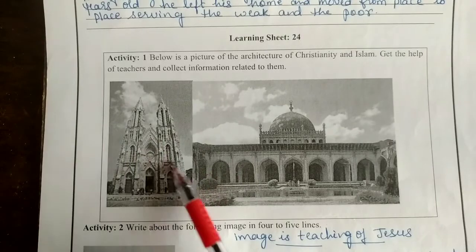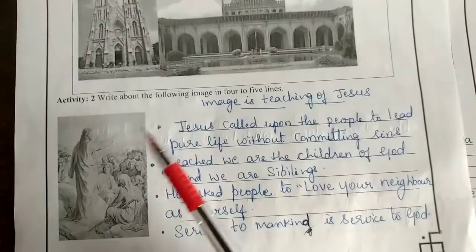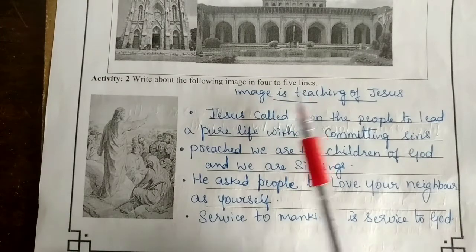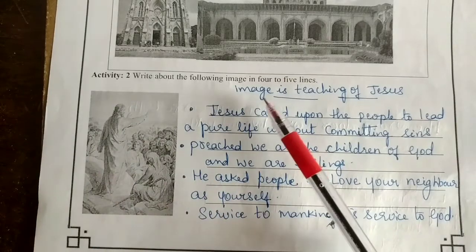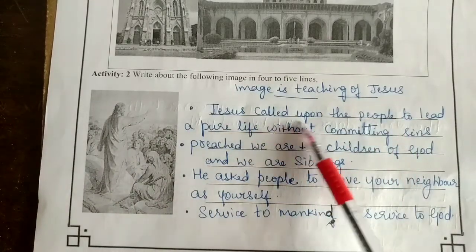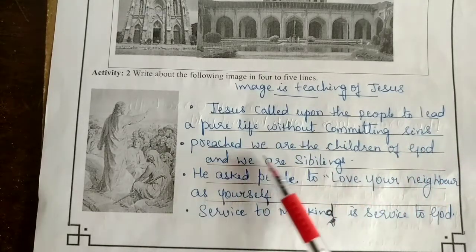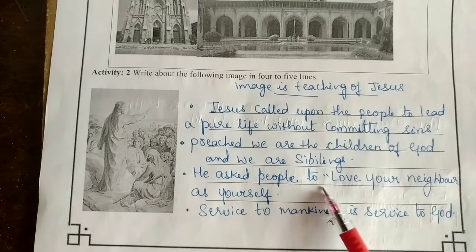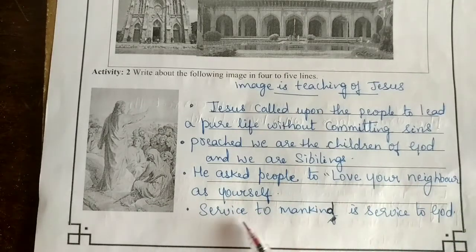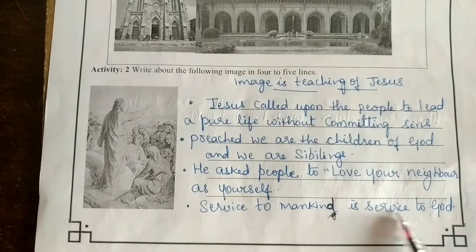This is a picture of architecture of Christianity and Islam. You have to get the help of the teacher and collect the information related to this. Write about the following image in four or five lines. The image is the teaching of Jesus. Jesus called upon the people to lead a pure life without committing sins. He preached that we are the children of God and we are siblings. He asked people to love your neighbor as yourself. Service to mankind is service to God.